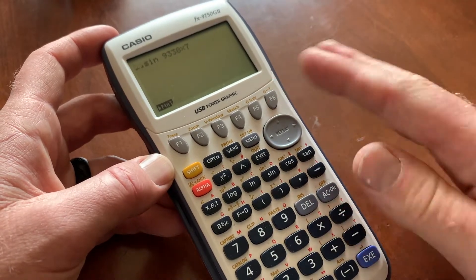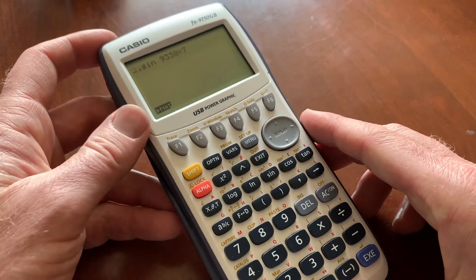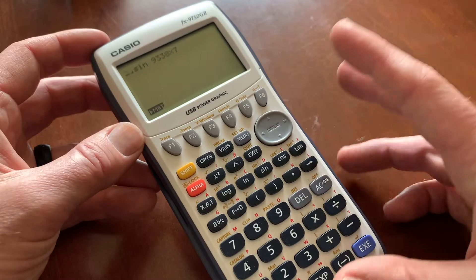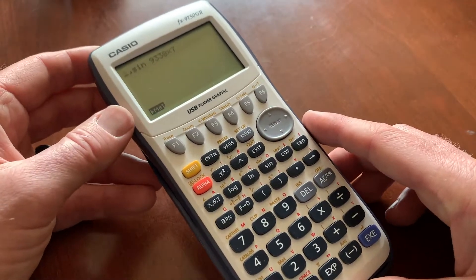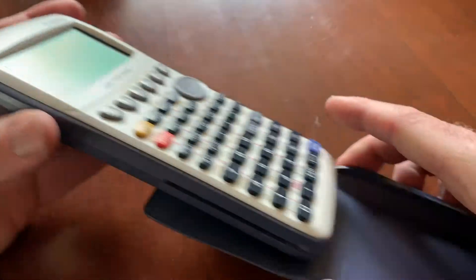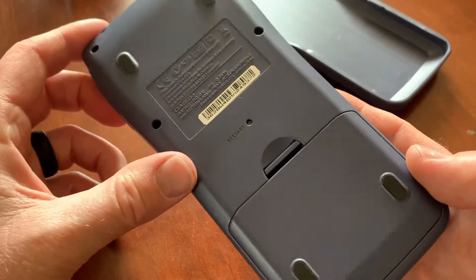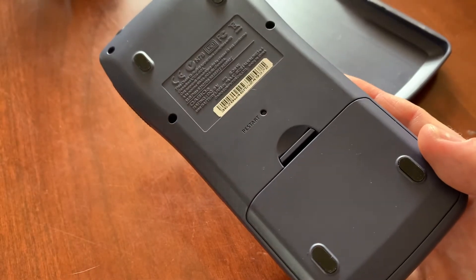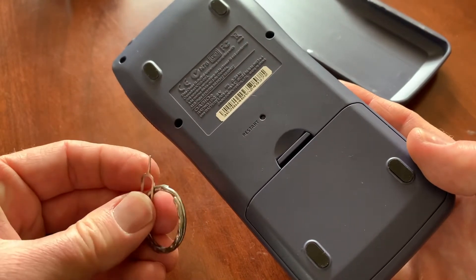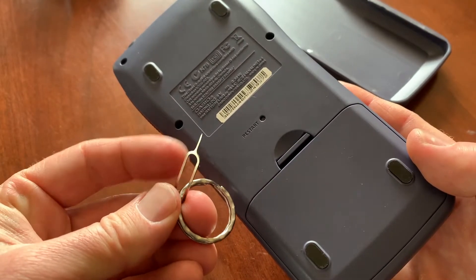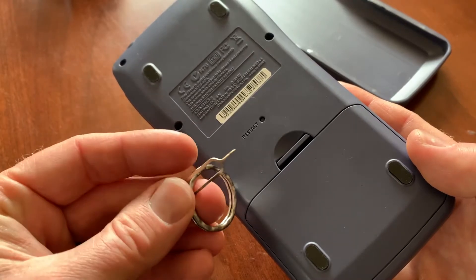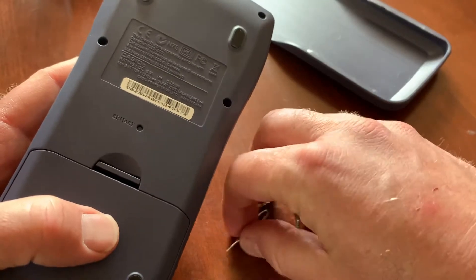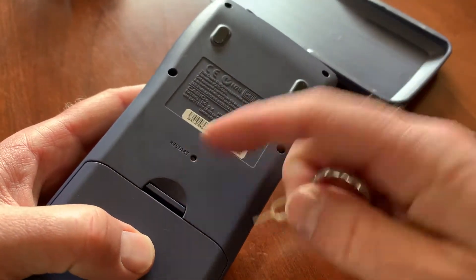If those two options don't work and you're still stuck on a screen with buttons not working at all, there's one more option: the factory reset button. As you can see, there's a reset button right here on the back. It's a little button inside here that we need to press. To do that, I'm going to use my SIM card key from my cell phone. You can use other things that fit in there, like a pen or needle.